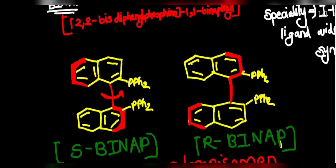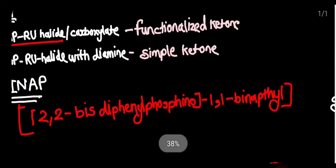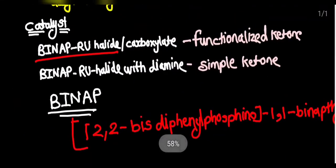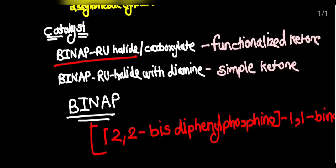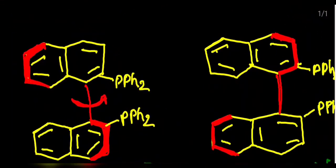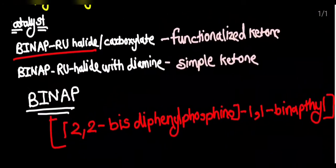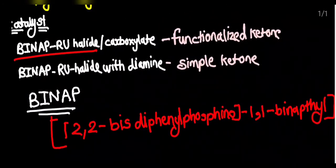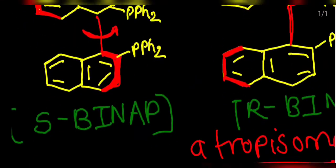The BINAP ligand along with the ruthenium complex — that is ruthenium halide or carboxylate — forms the catalyst in the Noyori Asymmetric Hydrogenation. After seeing this, we will see the mechanism of how this ligand and the ruthenium catalyst is used for doing the hydrogenation of a functionalized ketone as well as the simple ketone.